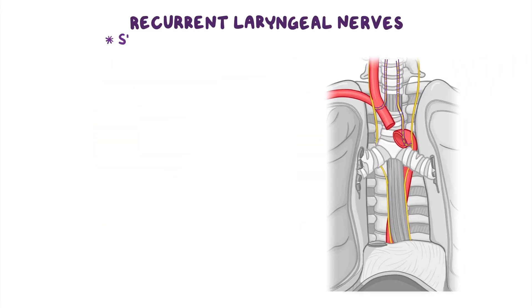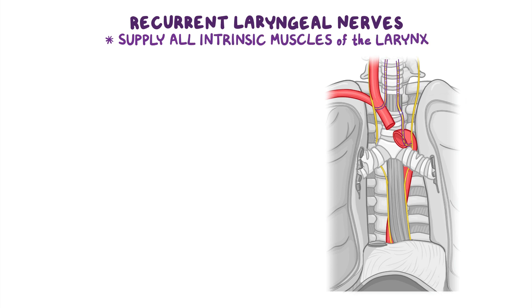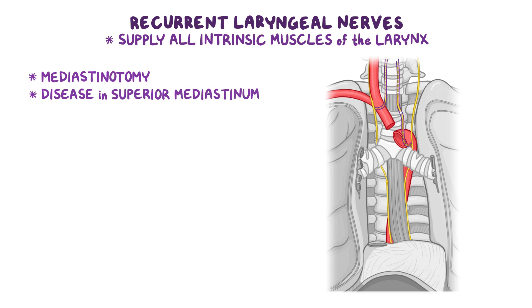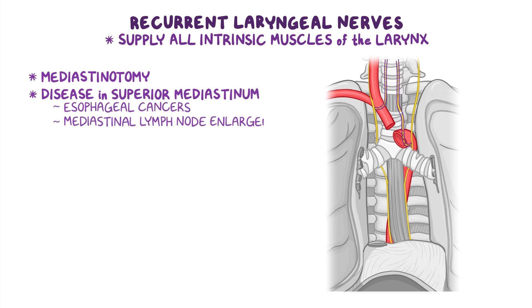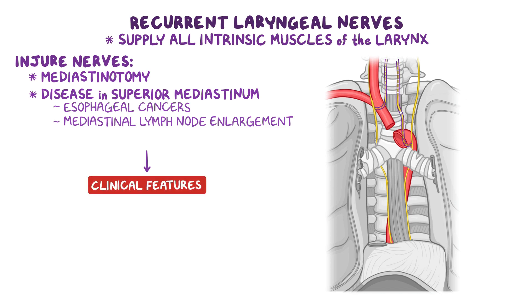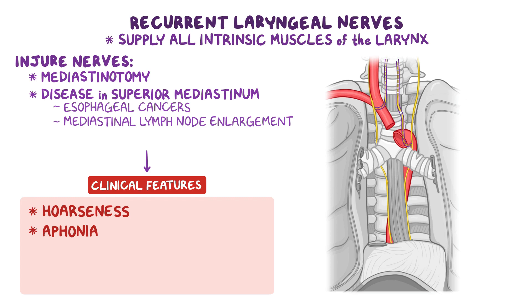Now, a little bit higher up there are the recurrent laryngeal nerves, which supply all intrinsic muscles of the larynx, except the cricothyroid, which is supplied by the external laryngeal nerve, a branch of the superior laryngeal nerve. Procedures in certain thoracic regions, like a mediastinotomy, or a disease in the superior mediastinum such as esophageal cancers and mediastinal lymph node enlargement, can injure these nerves and affect the voice, leading to hoarseness or even a loss of voice called aphonia. Furthermore, as the left recurrent laryngeal nerve wraps around the arch of the aorta, any dilation of the arch of the aorta can stretch and damage this nerve.